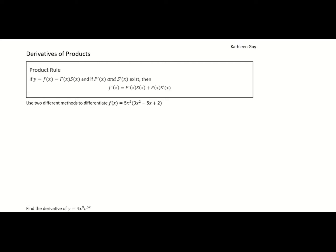If both of them separately have a derivative that exists, it is NOT the derivative of F times the derivative of S. So if you have y equal to F times S and you do y prime, this is not equal to F prime times S prime. We wish, but that's not how it works.